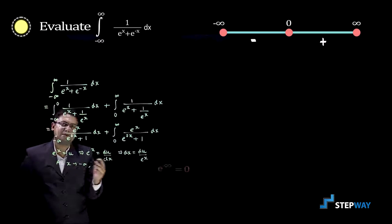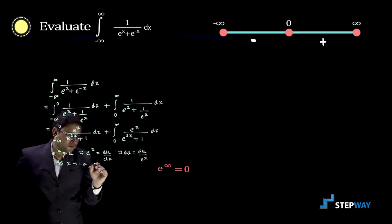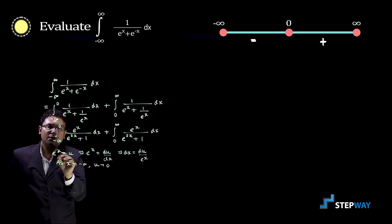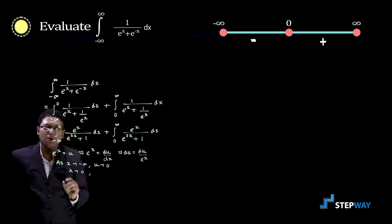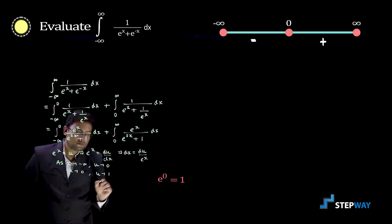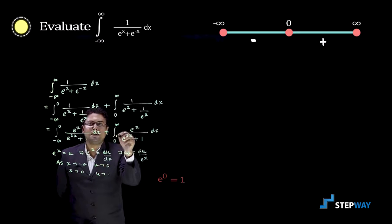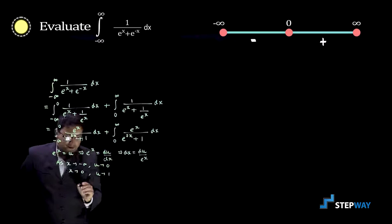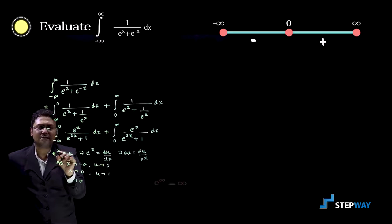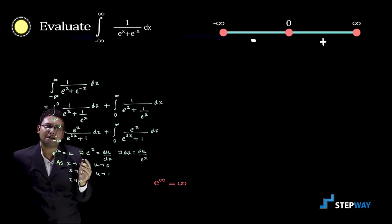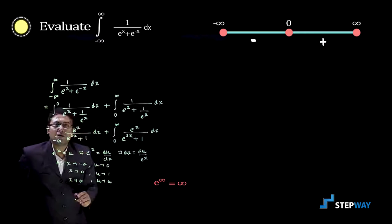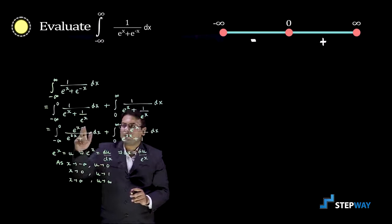As x tends to minus infinite, e raised to minus infinite is 0, so u tends to 0. As x tends to 0, e raised to 0 is 1, so u tends to 1. For the second integral, as x tends to infinite, e raised to infinite is infinite, so u tends to infinite. The limits are thus changed accordingly.